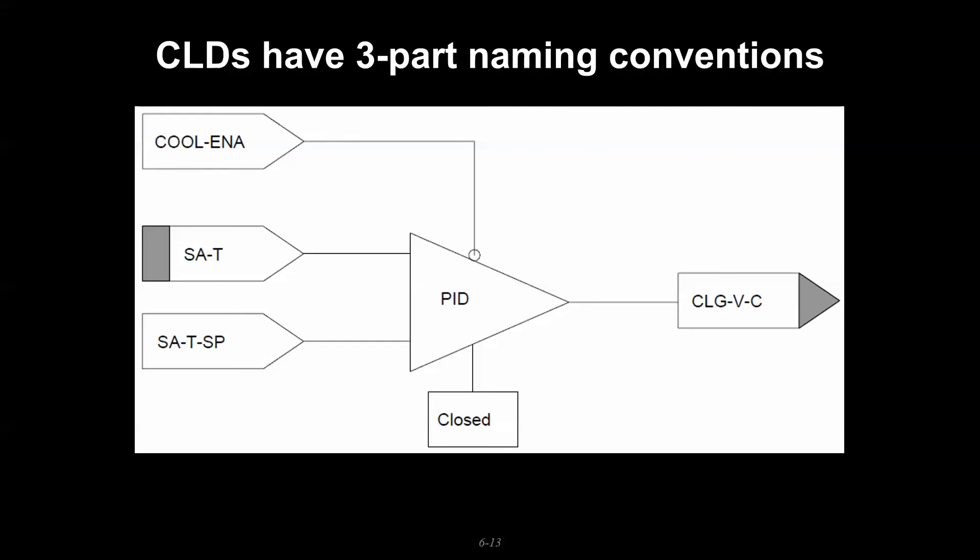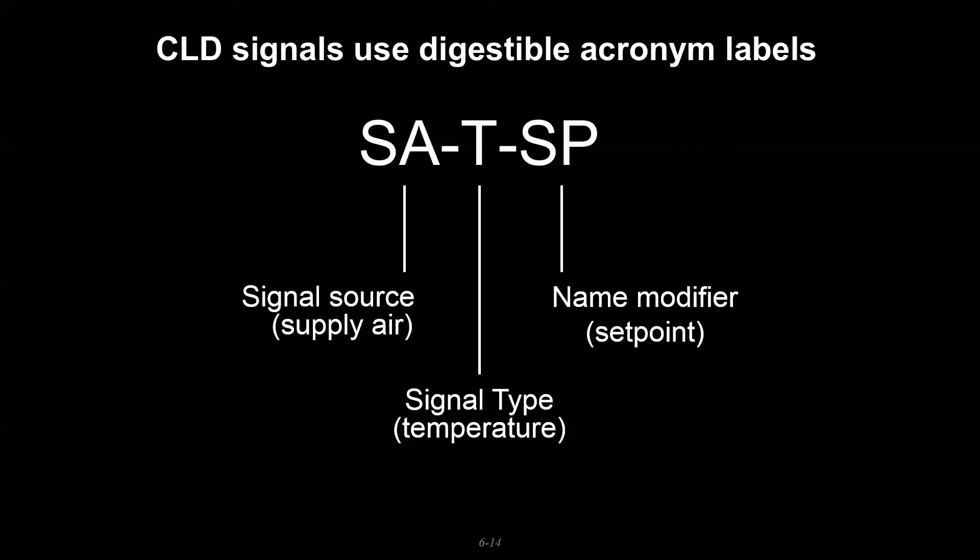Let's start with some convention so you can see some of these acronyms. The unified facility criteria and whole building design guide dictate some of the ordering of these acronyms in our control drawings. The first one is some type of signal source, like supply air. Second is the type of signal - if supply air is part of the air side system. Then the variable involved - whether we're looking at pressure, temperature, or humidity. In this case, T represents temperature. Finally we might have modifiers, which are optional. In this case we add the modifier to indicate that we're not looking at the supply air temperature itself, but the setpoint that we want that temperature to meet.